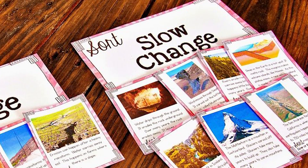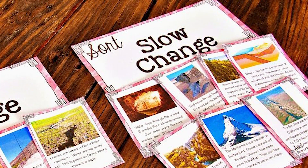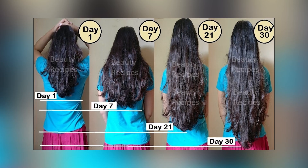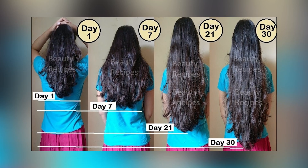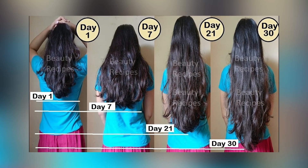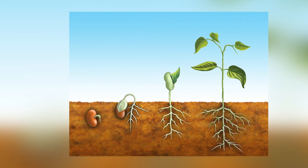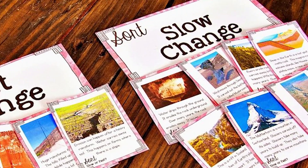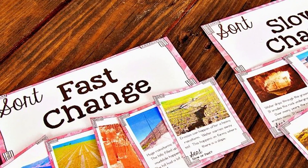For example, growth of nails, growth of hair, and germination of seeds. It takes a few hours or a few days to grow, so it is called slow changes. Next, fast changes — changes which take place within a short period of time are known as fast changes.